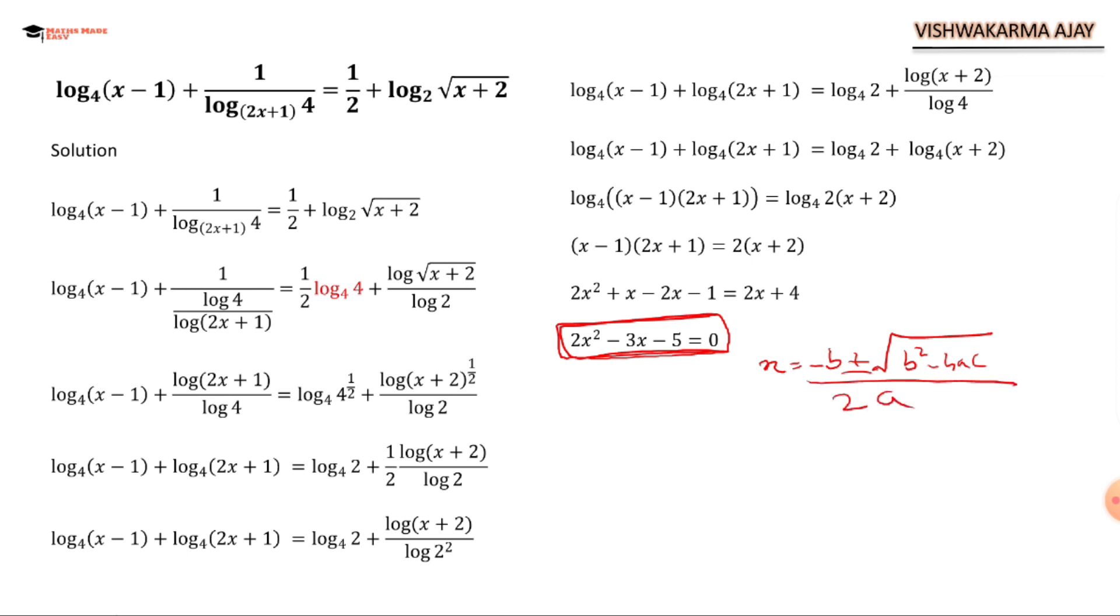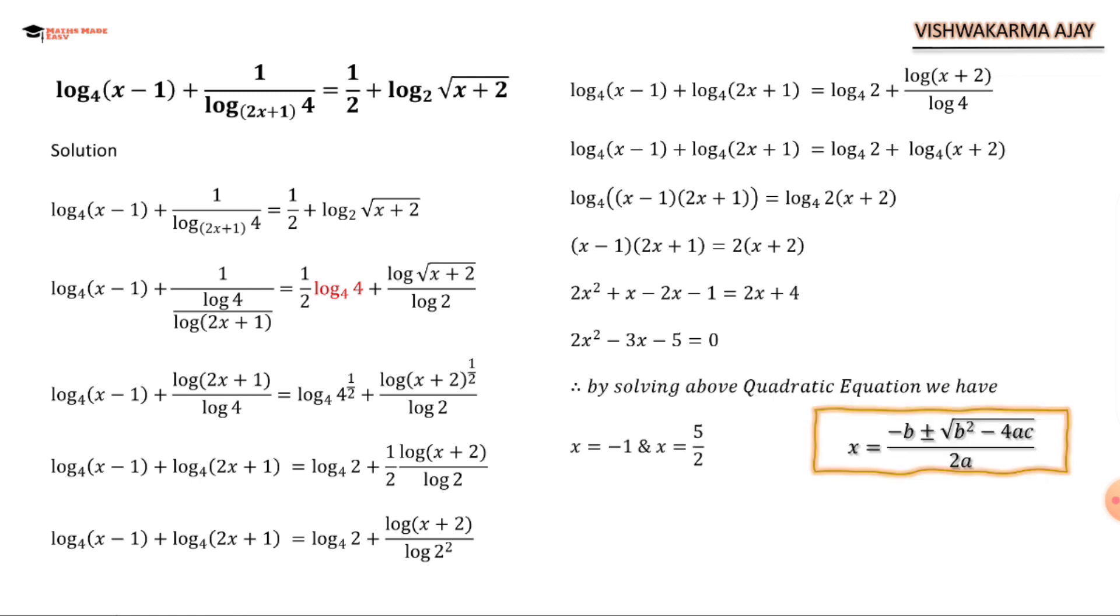Either you can use a factorization method; anything is okay. So by solving the quadratic equation we get x = -1 and x = 5/2.